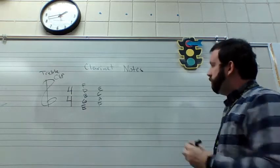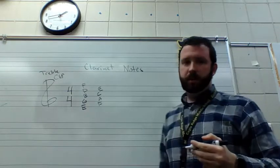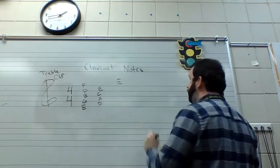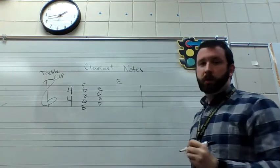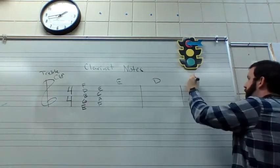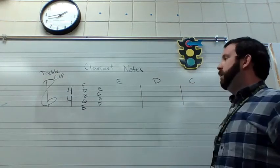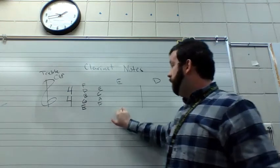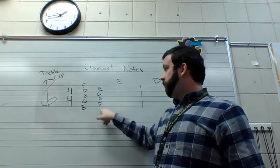For clarinet, we have learned three different notes: E, D, and C. Now, starting with E, the first note that we learned, if you notice, there are two different E's.